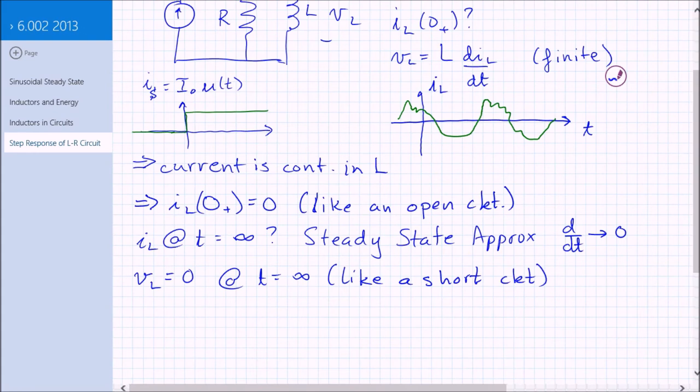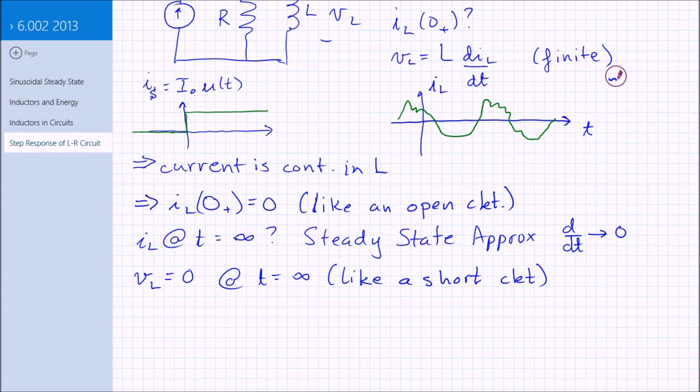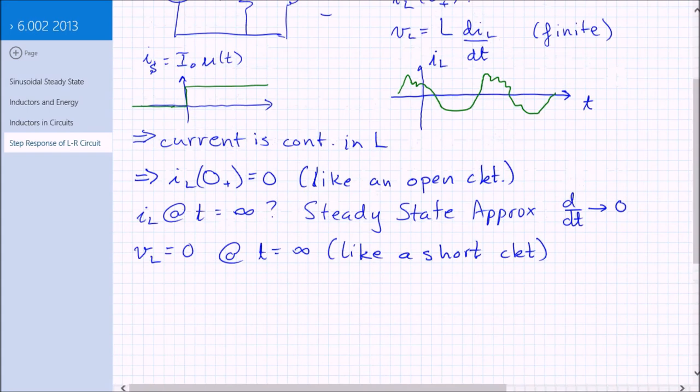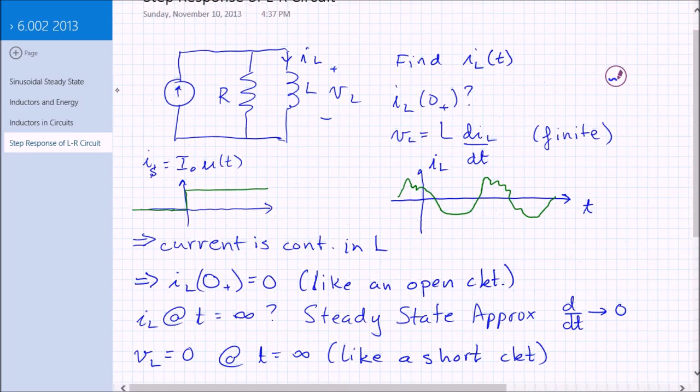That kind of makes intuitive sense. An inductor, after all, is just a winding of wire. And if you are no longer having changing currents, it just should be able to have current flow through it. So, now what we're going to do is we're going to find out what the current is at infinity. If the voltage is a short circuit, then all of this current is going to go through it. So, that implies that IL at infinity is equal to I0.